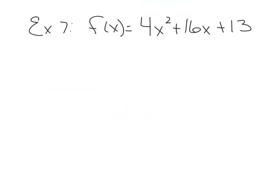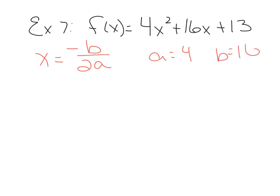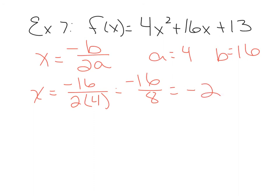Example 7: find the vertex of f(x) equals 4x squared plus 16x plus 13. This is not in vertex form, so we use the vertex formula: x equals negative b over 2a. For this function, a is 4 and b is 16. Plugging in: negative b is negative 16, over 2a which is 2 times 4, giving negative 16 over 8, which reduces to negative 2. So this function has a vertex with an x-coordinate of negative 2.